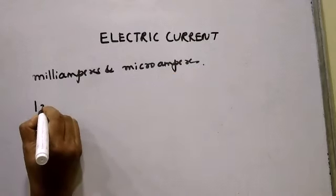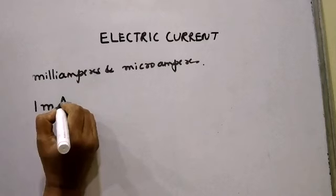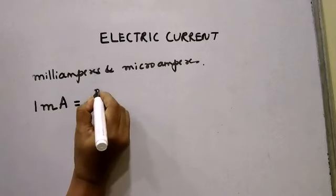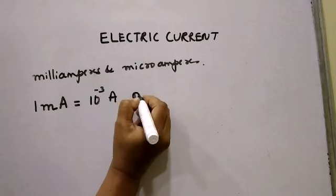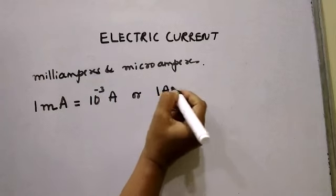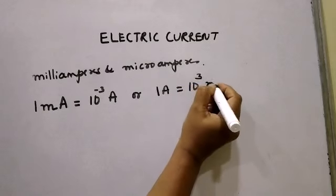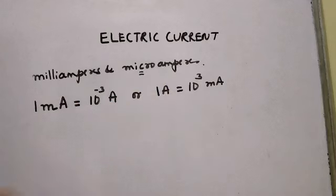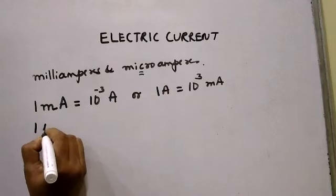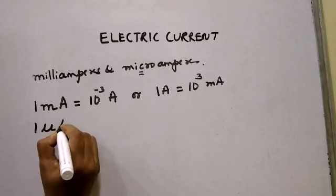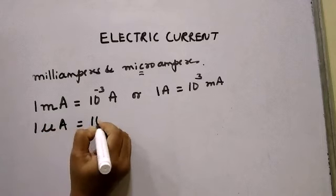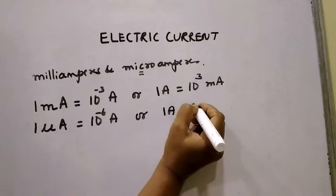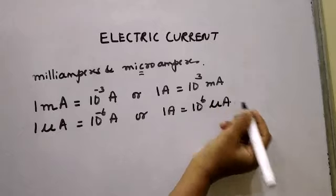1 milli-ampere is denoted as mA — small m and capital A. 1 milli-ampere is 10⁻³ amperes. Conversely, 1 ampere equals 10³ milli-amperes. Similarly, there is another smaller unit for measuring electric current — micro-ampere, denoted by μA. 1 micro-ampere is 10⁻⁶ ampere, or 1 ampere equals 10⁶ micro-amperes.